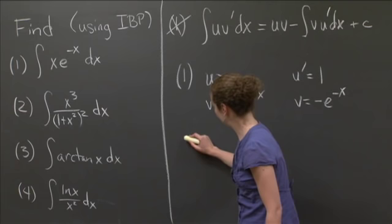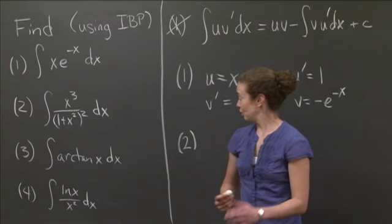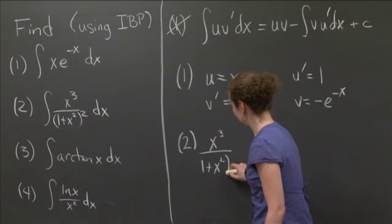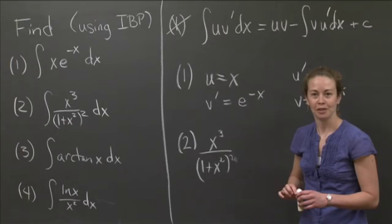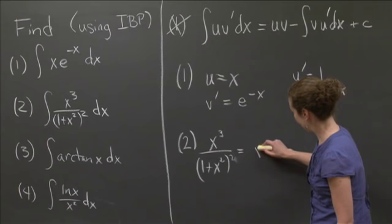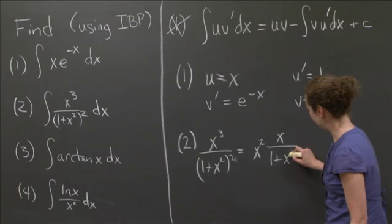Now number two, I'll give you the final answers at the end. Number two, picking u and v prime is a little more complicated. Let's look at this function x cubed over 1 plus x squared squared. The problem with picking u and v prime here is that it's hard to see what's going to be easy to integrate. So what we want to do is rewrite this as x squared times x over 1 plus x squared squared.